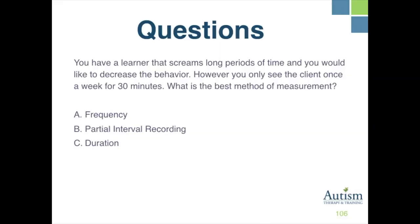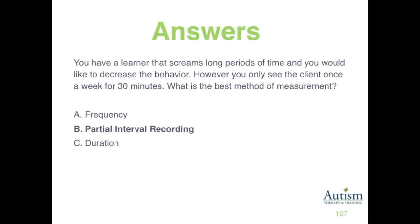You have a learner that screams for long periods of time and you would like to decrease the behavior. However, you only see the client once a week for 30 minutes. What is the best method of measurement? A, frequency; B, partial interval recording; or C, duration? The correct response is B, partial interval recording.